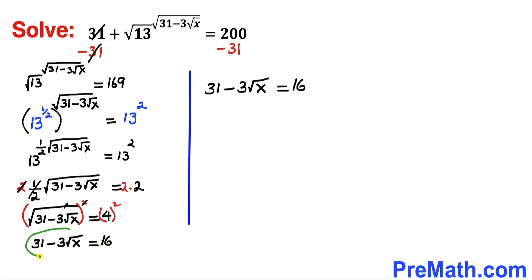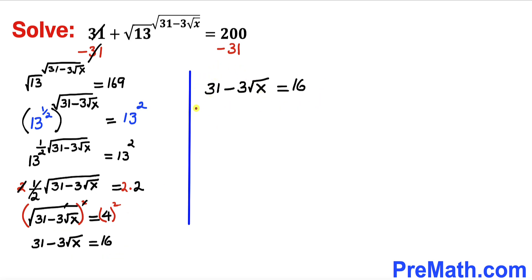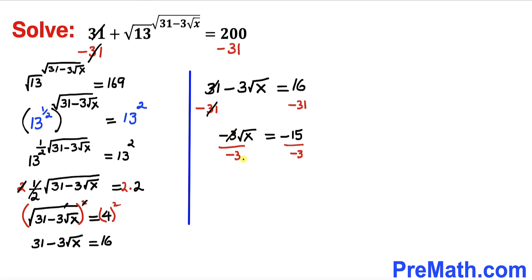Since we are running out of space, I have copied down the equation. Now I am going to subtract 31 from both sides — the 31 and negative 31 cancel. We get negative 3 times the square root of x equals negative 15 on the right hand side. Dividing both sides by negative 3, the negative 3 cancels, and the square root of x equals positive 5.